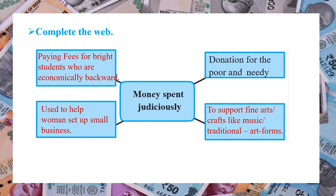The next icebreaker question is 'Complete the web.' The topic here is 'Money spent judiciously,' that is, money spent properly. One way is paying fees for bright students who are economically backward. Another is using money to help women set up small businesses. Next is to support fine arts and crafts like music and traditional art forms. The first one already given is donation for the poor and needy.